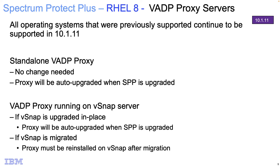For VADP proxies, all the operating systems that were previously supported continue to be supported in 10.1.11. If you're running a standalone VADP proxy, there's really no change needed — the proxy will be auto-upgraded when SPP is upgraded. And if you're running your proxy on a vSnap server, if the vSnap is upgraded in place, the proxy will be auto-upgraded as usual. If the vSnap server is migrated, then you're just going to reinstall from the Spectrum Protect Plus server after the upgrade.